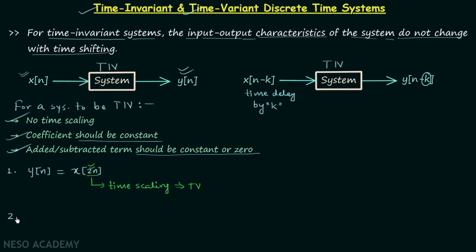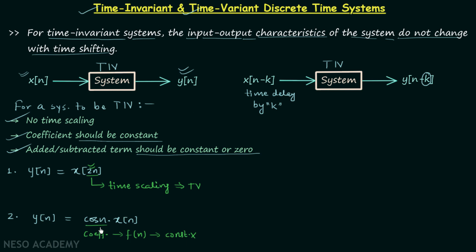In the second example, output y[n] = cos(n) · x[n]. Here cos(n) is the coefficient, and this coefficient is a function of n. When n changes, cos(n) will also change, therefore the coefficient is not constant. According to condition number two, the coefficient should be constant, and since it is not constant, the system is time variant.